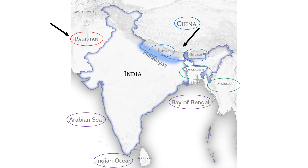In the west, India is bordered by Pakistan. In the east, India is bordered by Bangladesh and Myanmar. In the south, the southern boundary is defined by the Indian Ocean. The Bay of Bengal lies to the south-east and the Arabian Sea lies to the south-west.